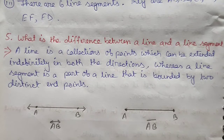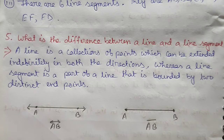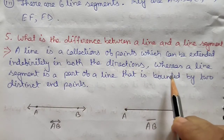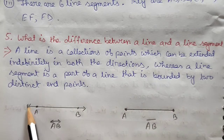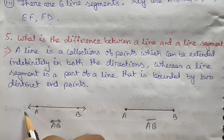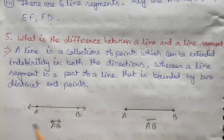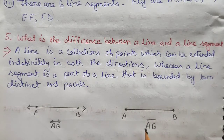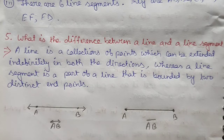The fifth question: what is the difference between a line and a line segment? A line is a collection of points that can be extended indefinitely in both directions — we represent it with arrowheads. A line segment is a part of a line bounded by two distinct points — we do not give arrowheads to line segments.